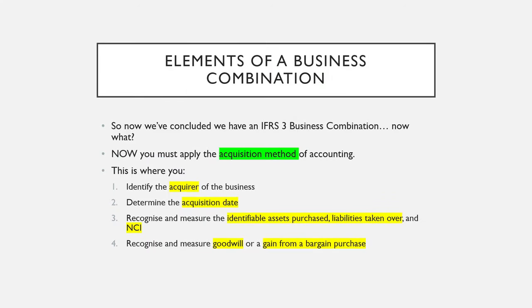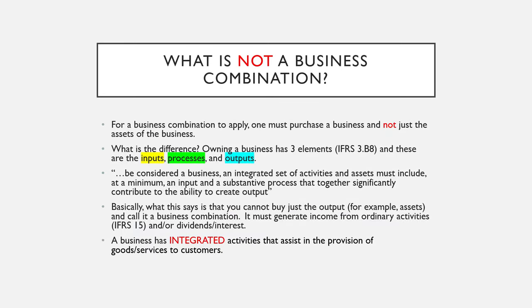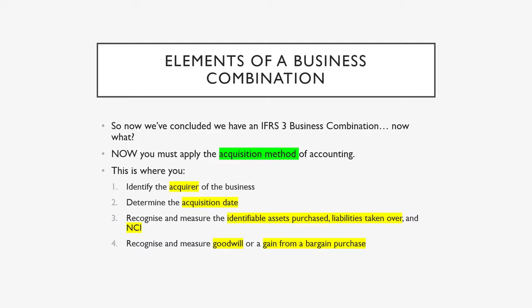This is the most important concept: once we've concluded we have an IFRS 3 business combination — sometimes your lecturer will state this explicitly, other times you may have to discuss whether it constitutes a business combination or not — you must apply the acquisition method of accounting. There are four very important steps.